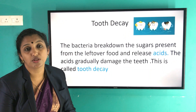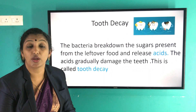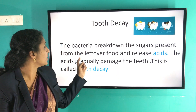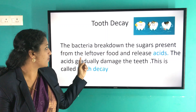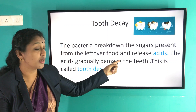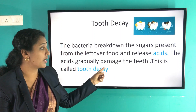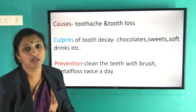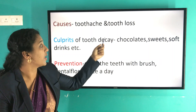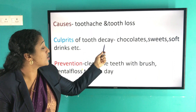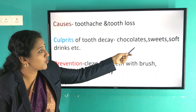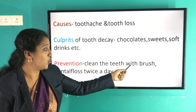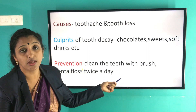Now you know the important role of teeth in digestion. Along with that, you should know about tooth decay. Bacteria break down the sugars present in leftover food and release acid. The acid gradually damages the teeth — this is called tooth decay. It causes toothache and tooth loss. The culprits of tooth decay are chocolates, sweets, and soft drinks. To prevent tooth decay, clean the teeth with a brush and dental floss twice a day.